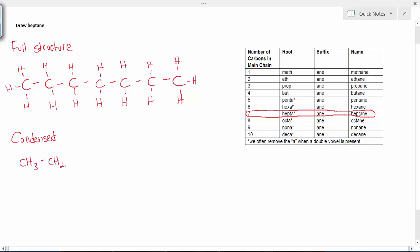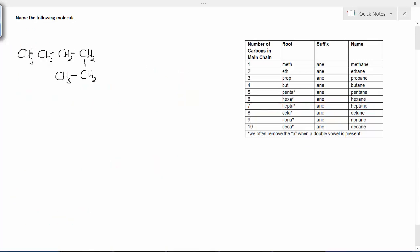So the condensed structural formula: CH3, CH2, CH2, CH2, CH2, CH2, CH3, and you can see that this matches the full structure directly above. The line structure, shown there, much simpler. Pause, go back through that if you need to.